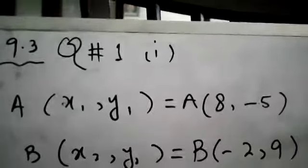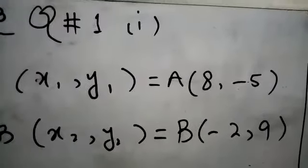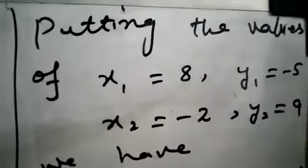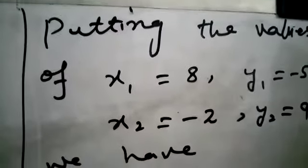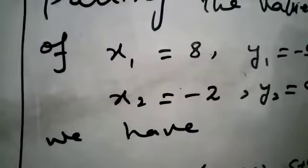Now here we will put the values of x1, y1, x2, y2. So putting the values of x1 = 8, y1 = -5, x2 = -2, y2 = 9.